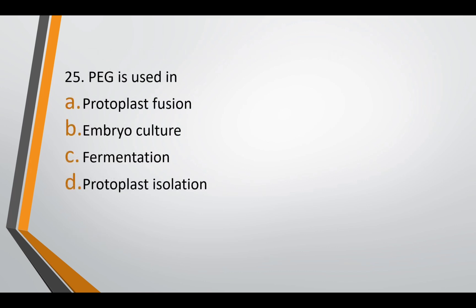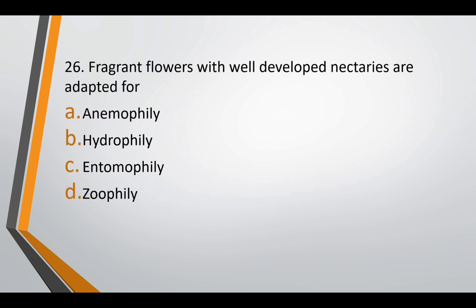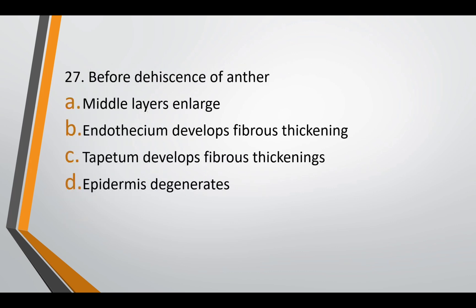Question twenty-five: PEG or polyethylene glycol is used in — protoplast fusion, embryo culture, fermentation, or protoplast isolation. The correct answer is option A — PEG is used in protoplast fusion. Question twenty-six: fragrant flowers with well-developed nectar are adapted for — anemophily, hydrophily, entomophily, or zoophily. The correct answer is option C — entomophily, that is pollination via insects. Question twenty-seven: before dehiscence of anther — middle layer enlarges, endothecium develops fibrous thickening, tapetum develops fibrous thickening, or epidermis degenerates. The correct answer is option B — endothecium develops fibrous thickening.